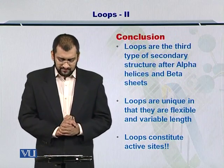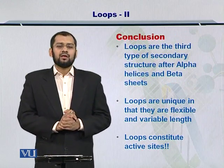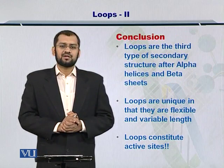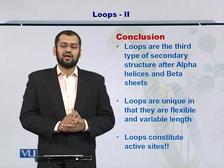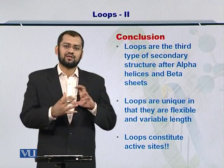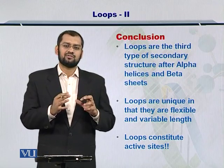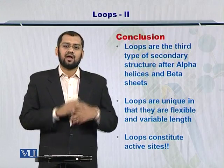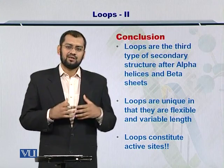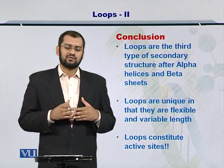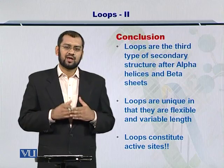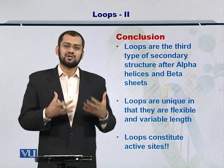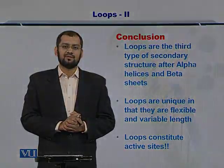In conclusion, the loops are the third type of protein secondary structure, and they are very useful because they bring together secondary structures such as alpha helices and beta sheets. While they bring these other secondary structures together, they also constitute active sites or functional sites in the proteins.